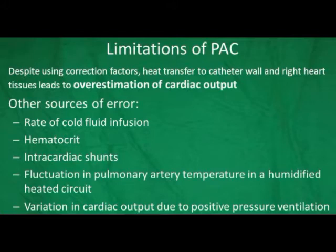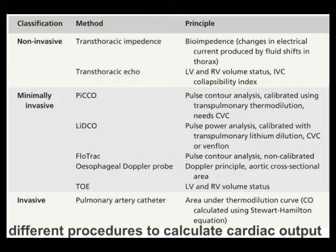The major principles and techniques of cardiac output measurement include the Fick principle, indicator dilution techniques such as thermodilution and pulse dye densimetry, lithium dilution, arterial waveform techniques, transthoracic impedance and bioreactance analysis. Doppler ultrasound is also widely available and commonly used for measuring cardiac output.